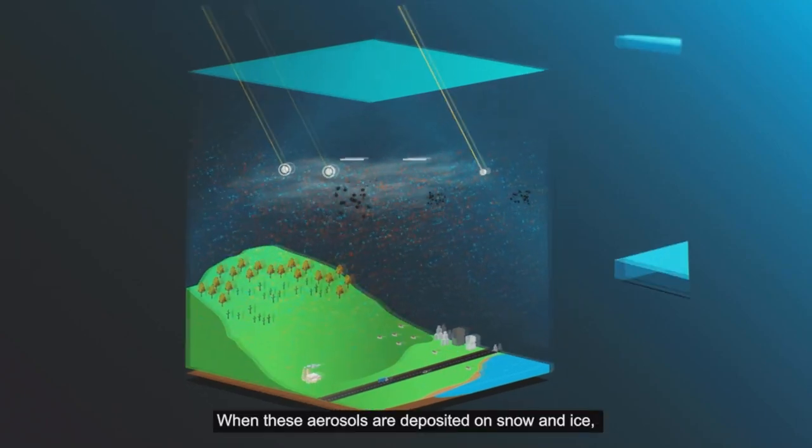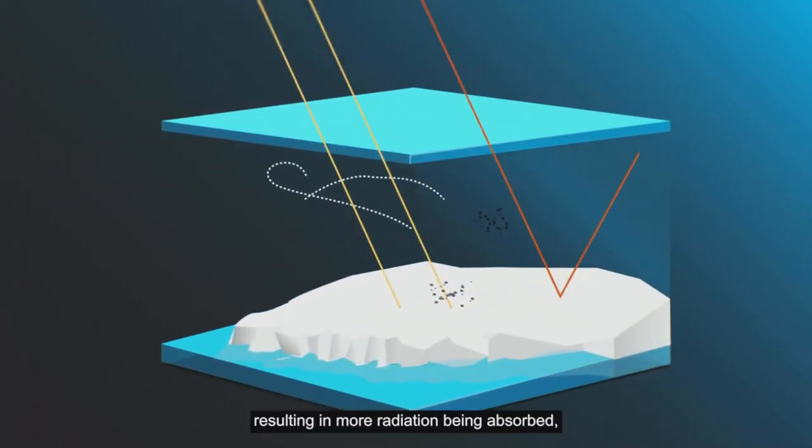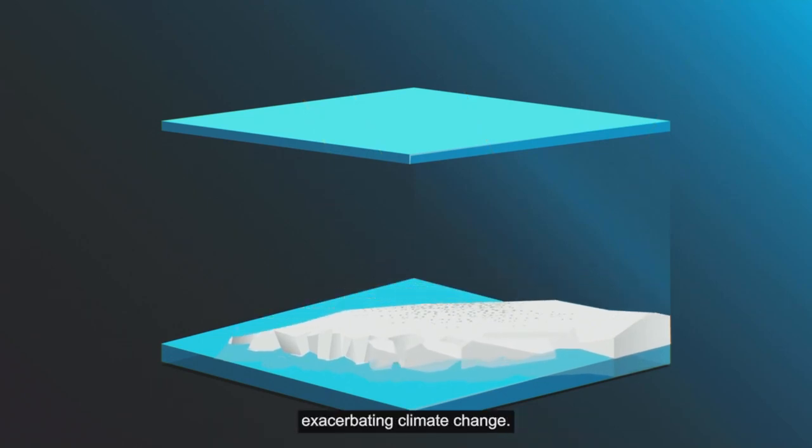When these aerosols are deposited on snow and ice, they darken their surfaces, resulting in more radiation being absorbed, leading to warmer temperatures and melting snow, exacerbating climate change.